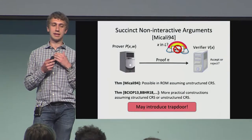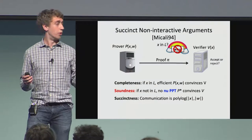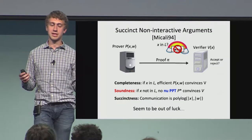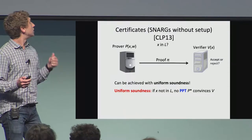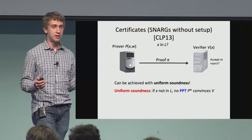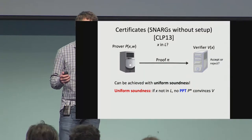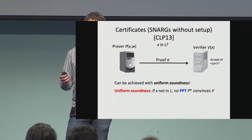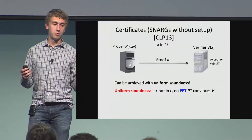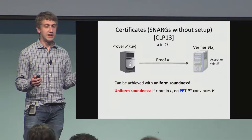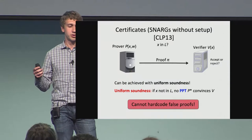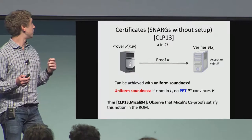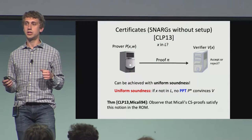What we really want is some guarantee without any possible setup, where we want soundness even against non-uniform attackers. Another approach was considered by Chung, Lin, and Pass in 2013, by the name of certificates — SNARGs without any setup. They realized we can't hope for non-uniform soundness, but at least uniform soundness can be achieved, where no uniform polynomial time attacker can convince the verifier of a false statement. Because the attacker is a constant-size Turing machine, it doesn't have the ability to hard-code false proofs even if they exist. They observe that Micali's CS proofs actually satisfy this notion in the random oracle model.